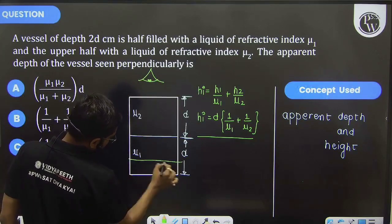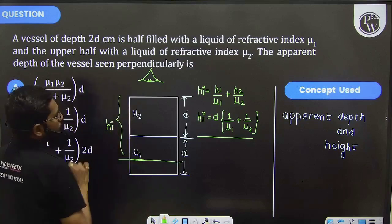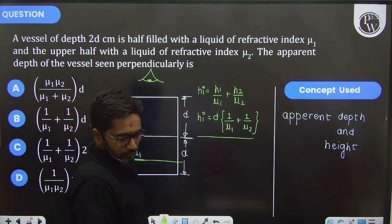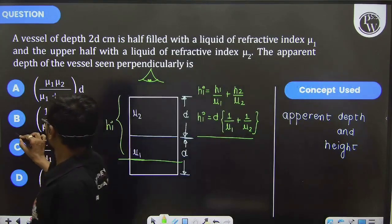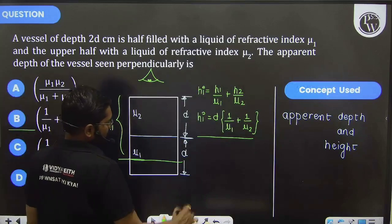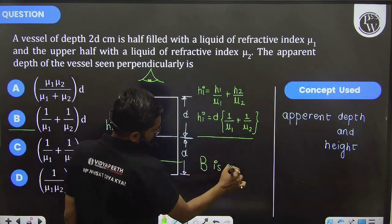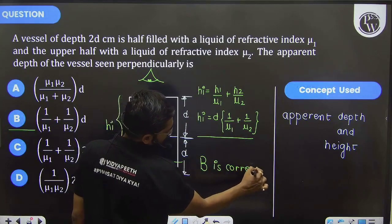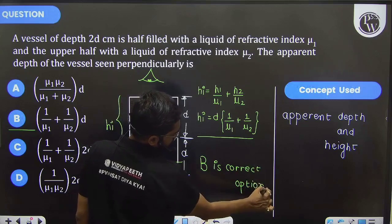And that value will equal to this. So the correct option, yes, the second option, you can say that d is the correct option. D is the correct option.